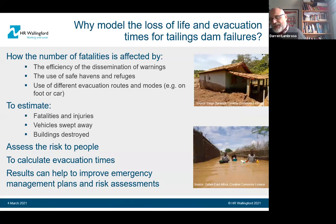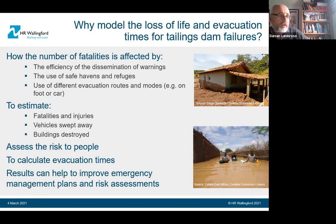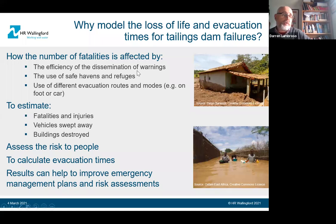One question we sometimes get asked is: why do we model loss of life and evacuation times for tailings dams? One reason is to look at how the number of fatalities is affected by the efficiency of warnings, how well they're disseminated, whether we can reduce loss of life using safe havens and refuges, and how different evacuation routes and modes of transport affect fatalities. The overarching goal is really to improve emergency planning and risk assessments for these structures so you don't get these tragic accidents — or if they do happen, you minimise the risk to people, to the environment, and to people's livelihoods.